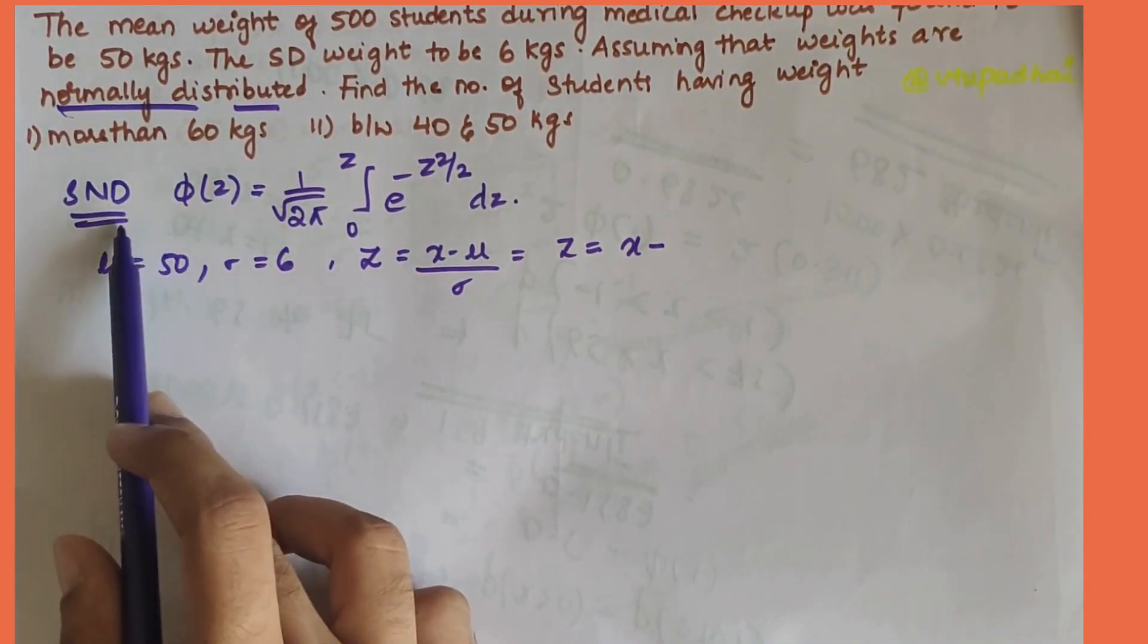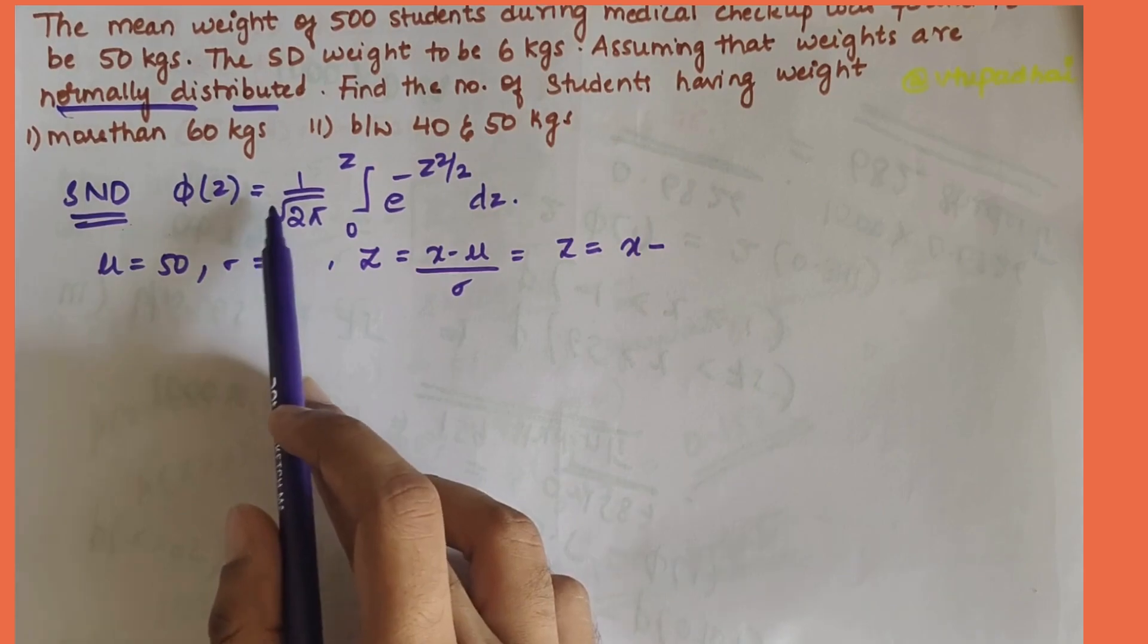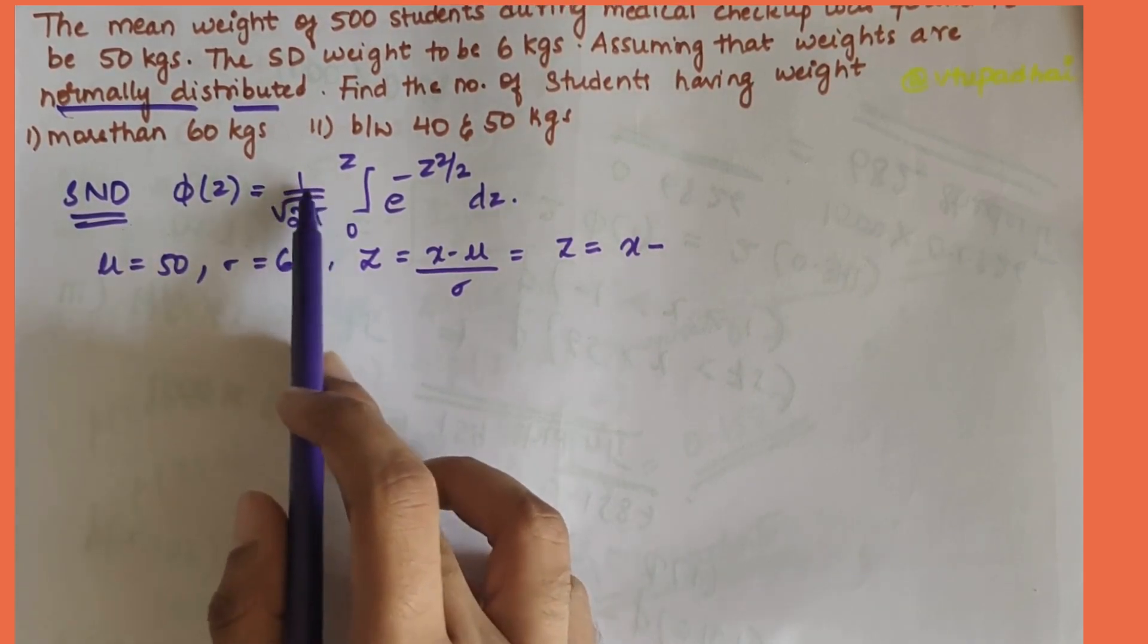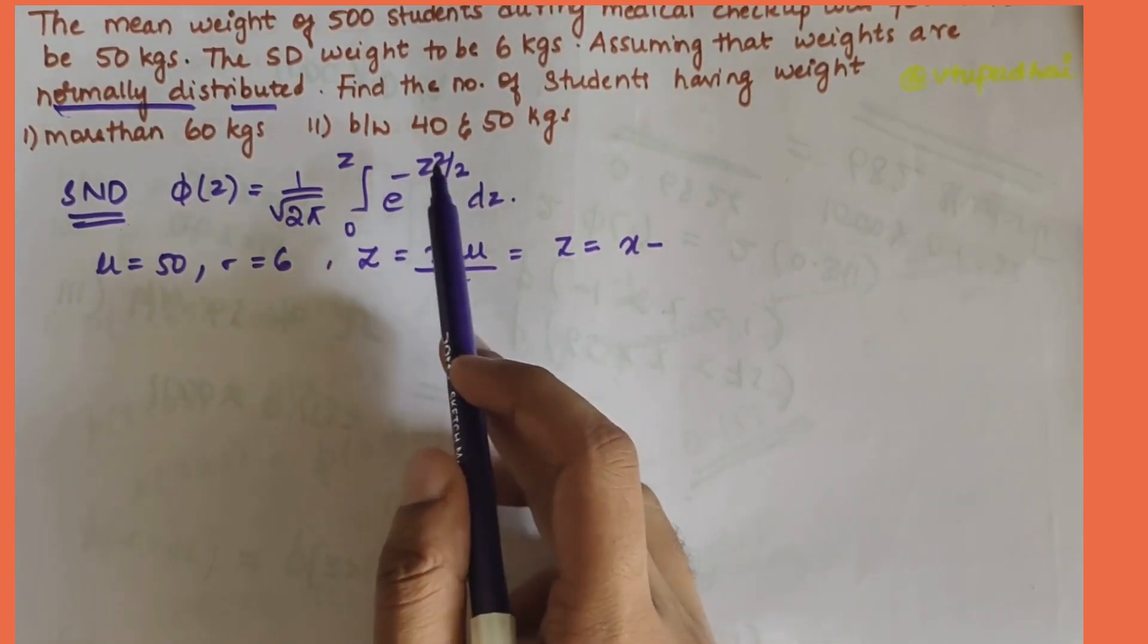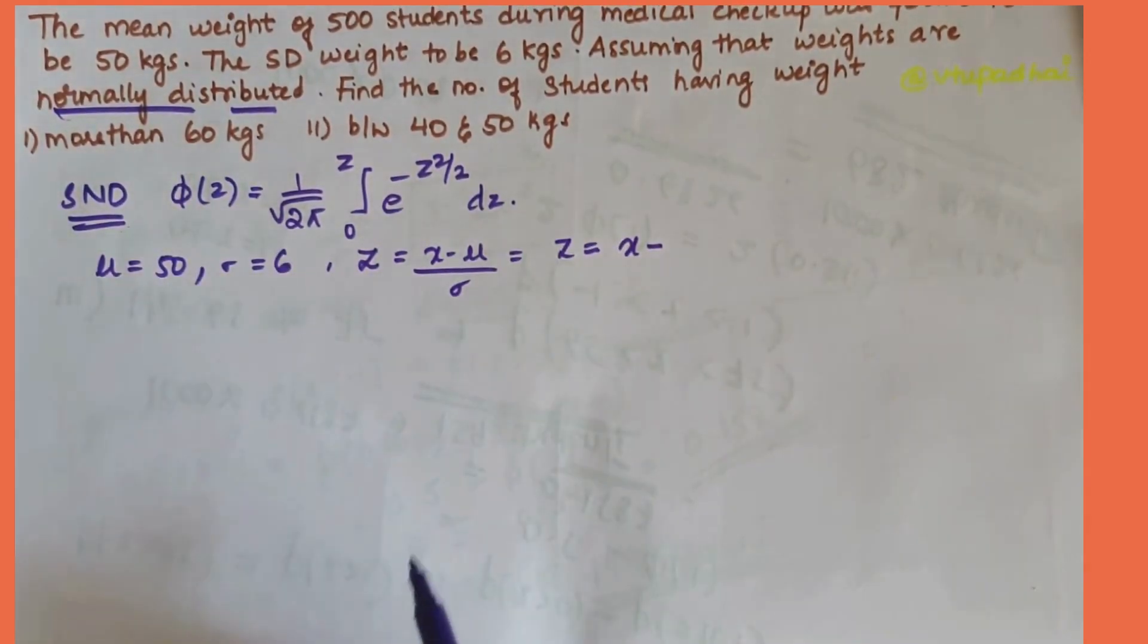First let's write the formula for normal distribution that is φ(z) is equal to 1 by under root 2π, 0 to z limits are from 0 to z, e to the power minus z square by 2 into dz.